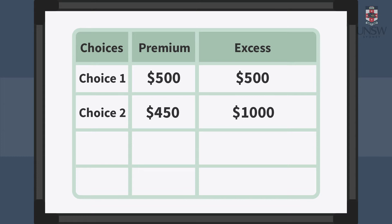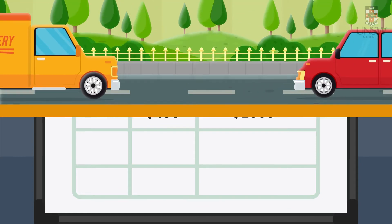against a higher contribution to a possible claim in the future, say $1,000 instead of $500. In this example, the premium is to be paid now and has to be paid no matter what.